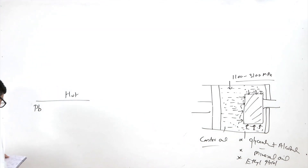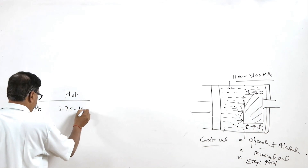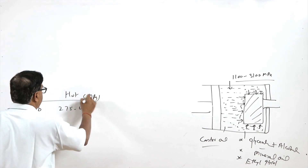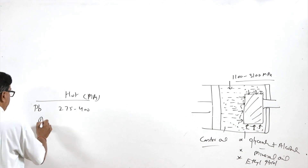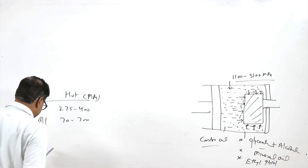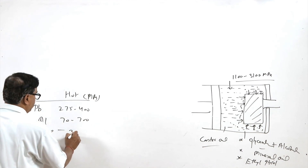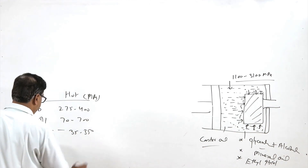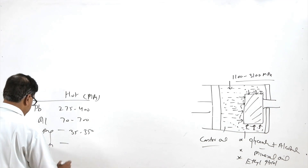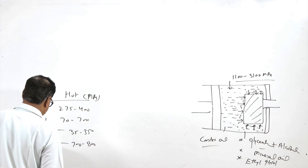For aluminium it may vary from 70 to 700 MPa, for magnesium from 35 to 350 MPa, and for zinc alloys 700 to 800 MPa.